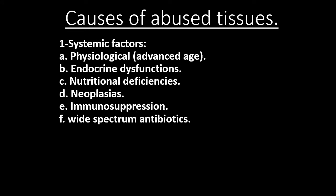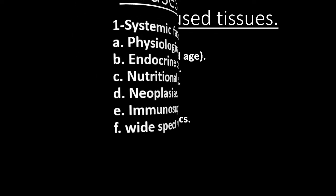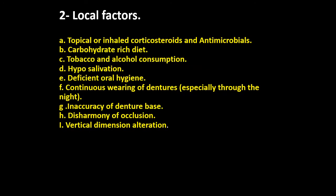The causes of abused tissue could be due to systemic factors such as advancing age, endocrine or nutritional deficiencies, neoplasia, immunosuppression, and wide-spectrum antibiotics. Local factors include topical or inhaled corticosteroids, antimicrobials, a carbohydrate-rich diet, deficient oral hygiene, faulty wearing habits of the denture, or disharmony of occlusion and vertical dimension alteration.